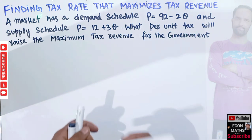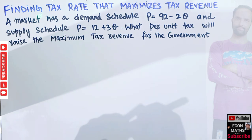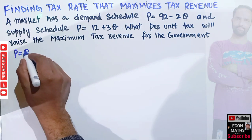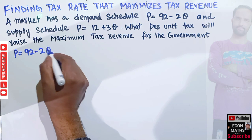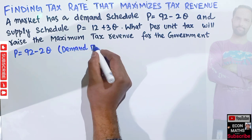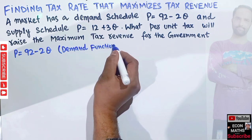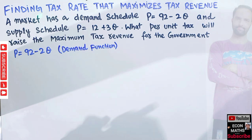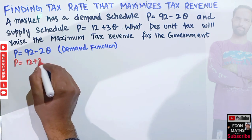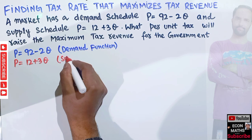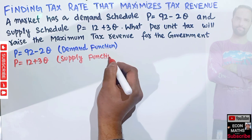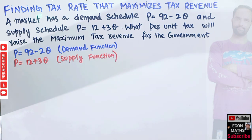We need to find the tax rate that maximizes the government's tax revenue. We are given the demand function P = 92 - 2Q and the supply function P = 12 + 3Q.